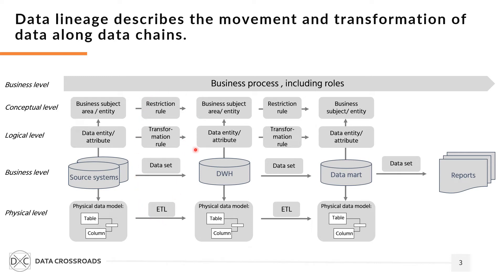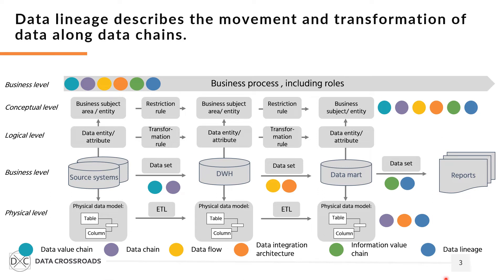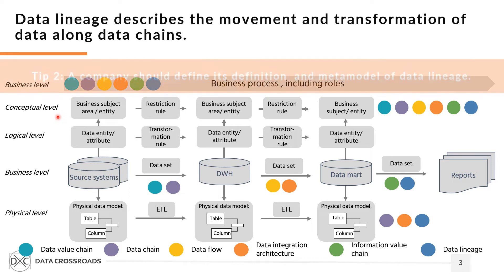As I just mentioned, the data lineage definition intersects definitions of other concepts. You can see the results of this analysis on this slide. I used circles of six various colors to indicate different concepts, and then plotted the content of various definitions to these abstraction levels. The first conclusion is that data lineage can be documented at four abstraction levels: business, conceptual or semantic, logical, and physical.